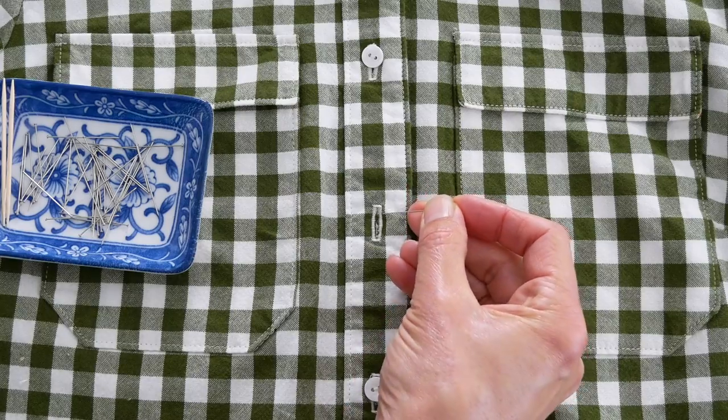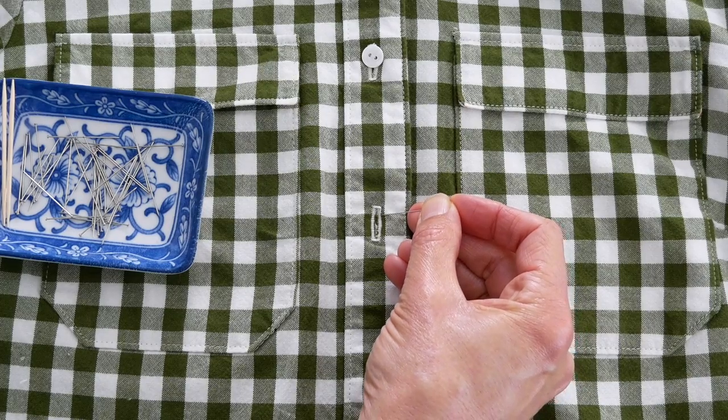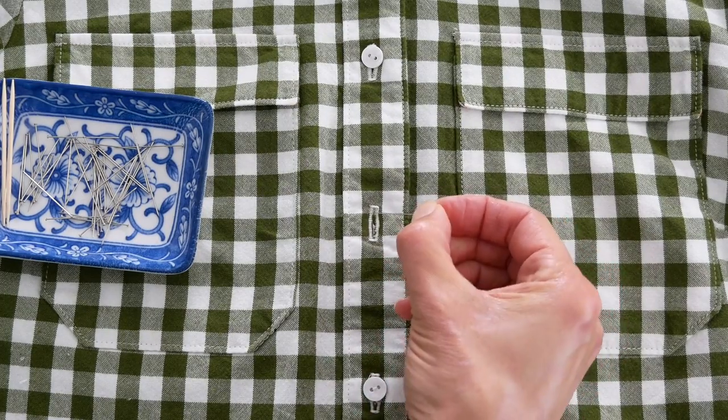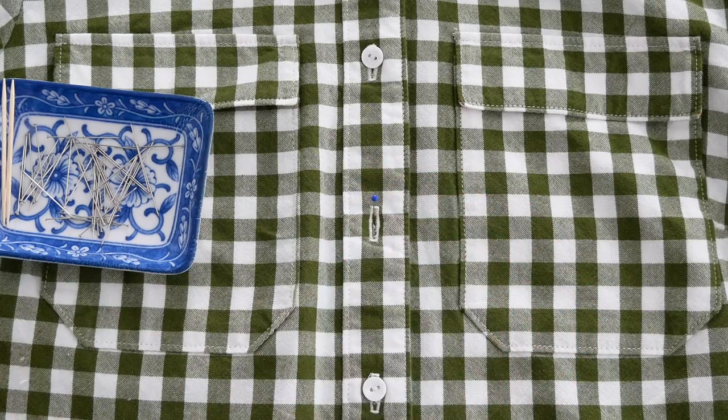After you got it nice and flat, take a pin, go down about one-eighth of an inch from the top and stick the pin through the garment. That is where your button is going to go.